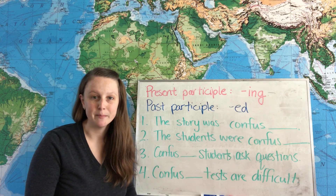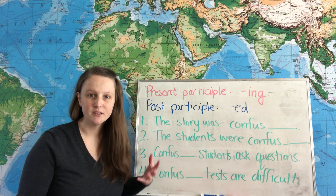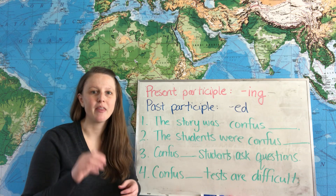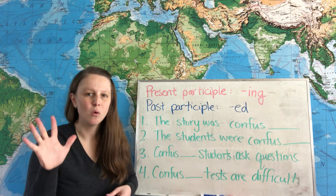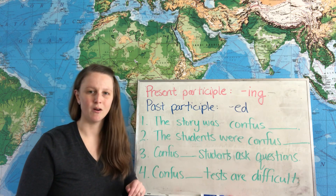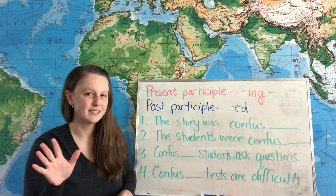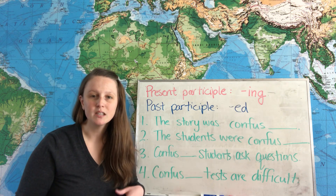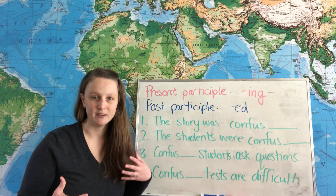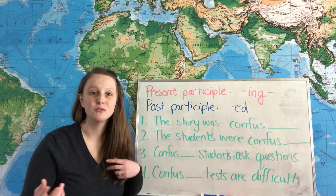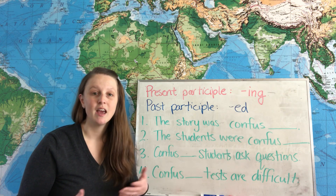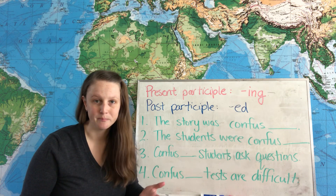Today we're going to talk about participial adjectives. These are those words that my students always mix up, like bored and boring or interested and interesting. We're going to talk about the differences between those two types of participial adjectives and how to choose the correct one.